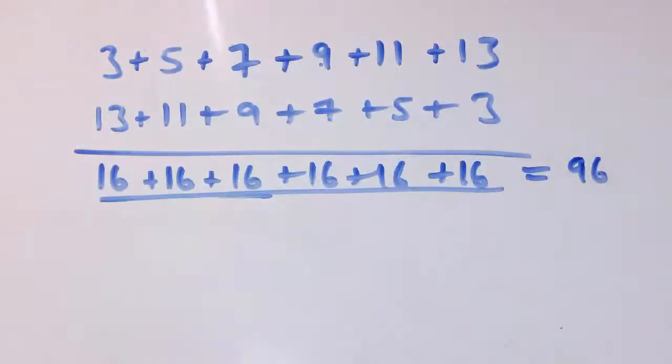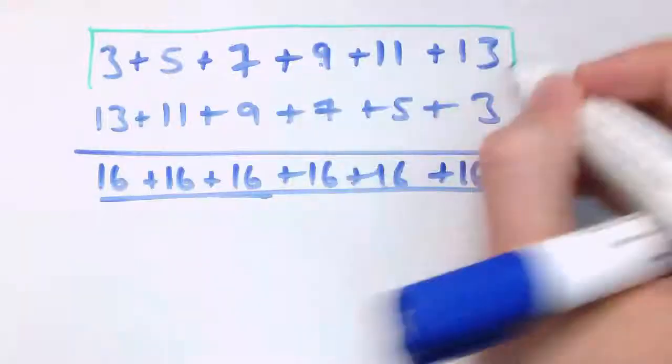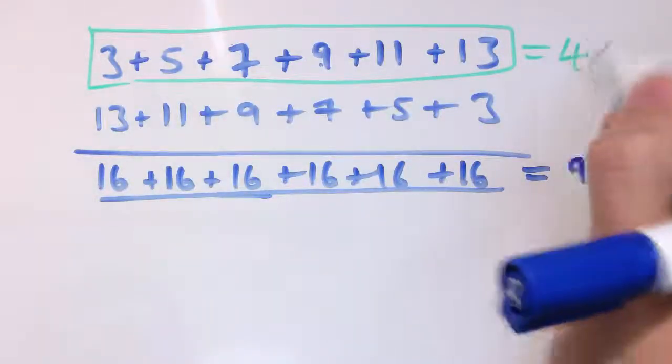So what I want for the sum of the sequence, the original bit, just that we had here, would be half of 96 or 48.